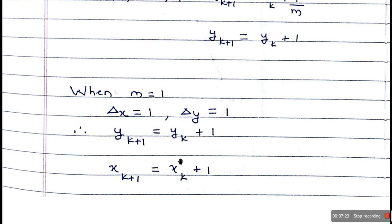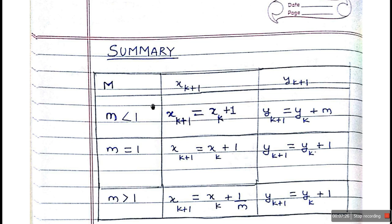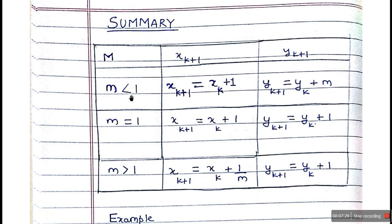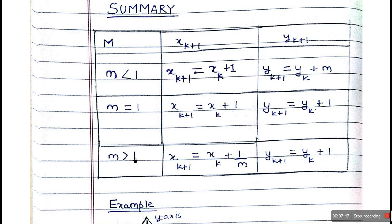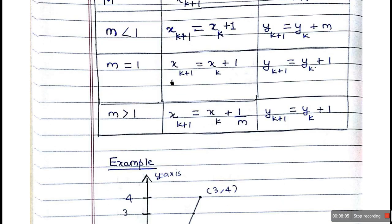Here is the summary: when M is less than 1, XK+1 = XK + 1 and YK+1 = YK + M. When M equals 1, XK+1 = XK + 1 and YK+1 = YK + 1. When M is greater than 1, XK+1 = XK + 1/M and YK+1 = YK + 1. This is how we compute the next X and Y coordinates in each case.